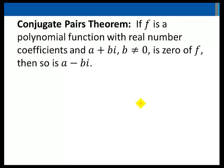The conjugate pairs theorem: if f is a polynomial function with real number coefficients and a plus bi, where b is not equal to 0, is a zero of f, then so is a minus bi.